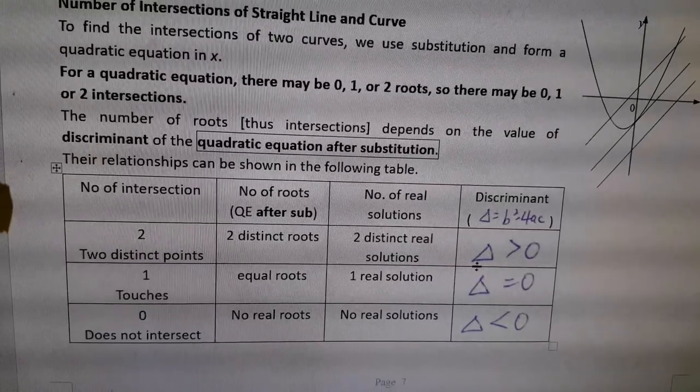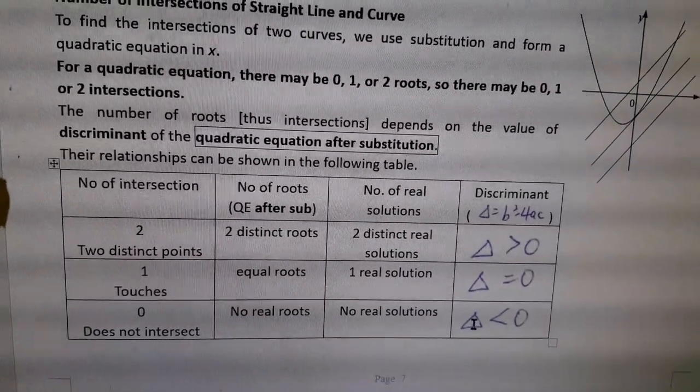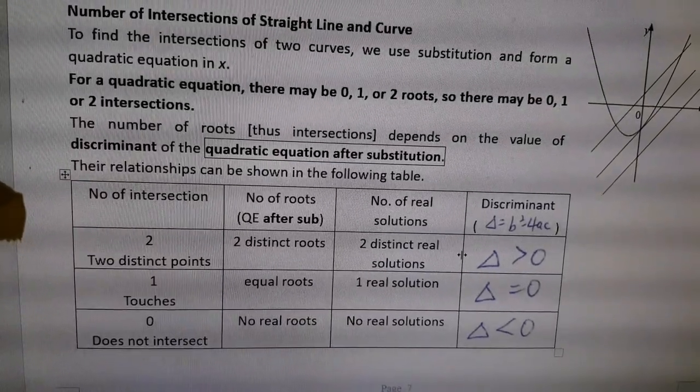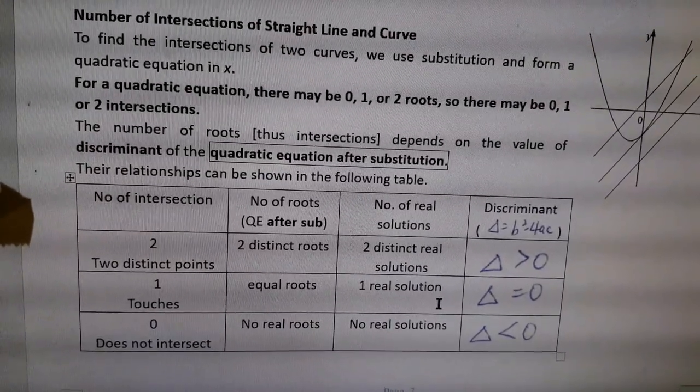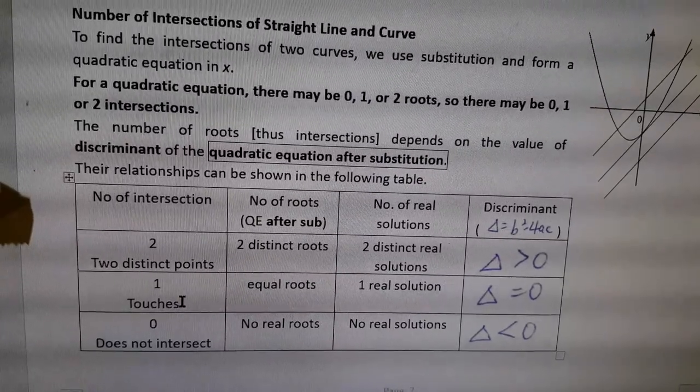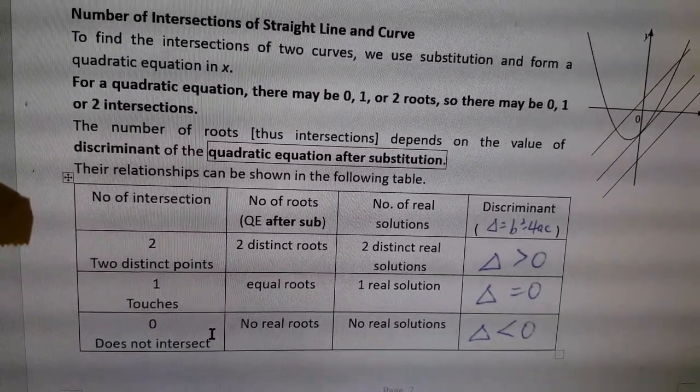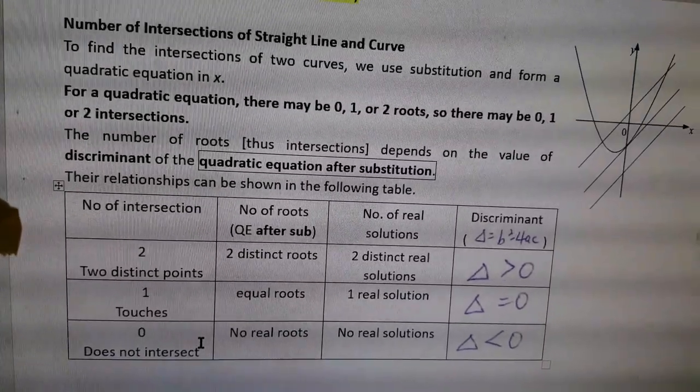If the discriminant is greater than zero, there are two intersection points. If discriminant equals zero, one point. If smaller than zero, no real root or no intersection point.